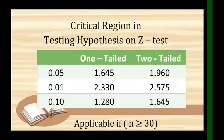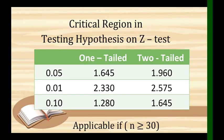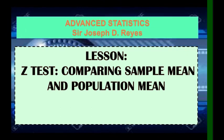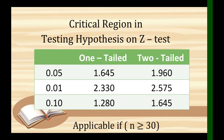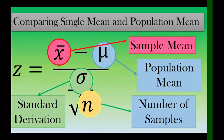Let's proceed in solving the Z-test for comparing sample means and population means. We need to use the critical region in testing hypothesis on the Z-test. We have one-tailed and two-tailed, and alpha values of 0.05, 0.01, and 0.10. The Z-test is applicable if n is greater than or equal to 30.